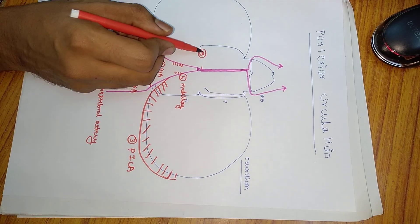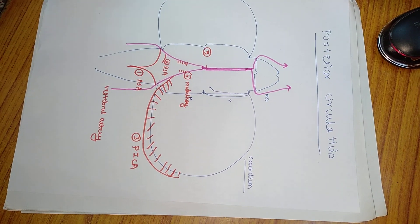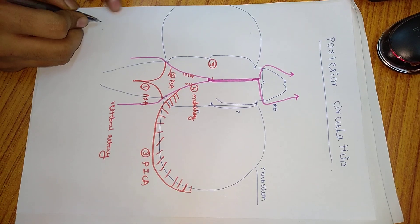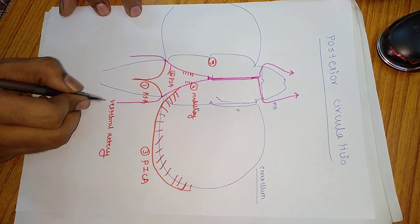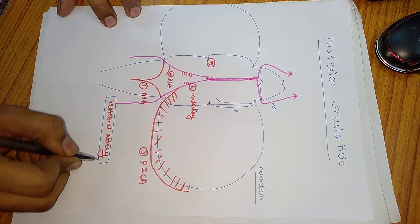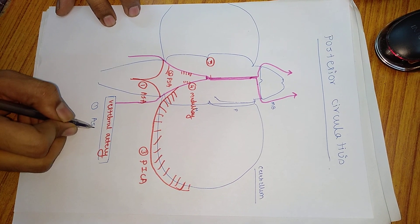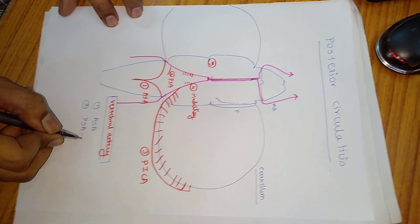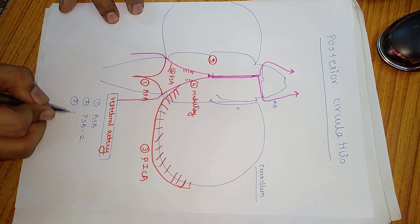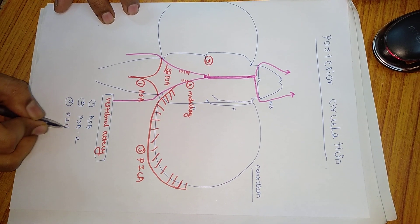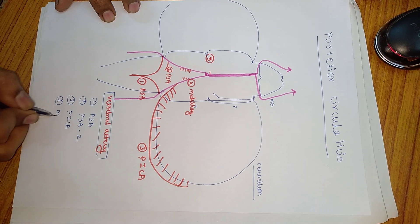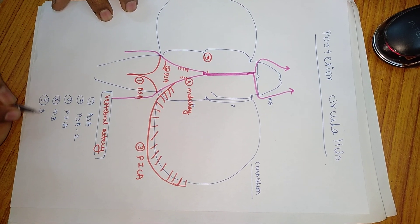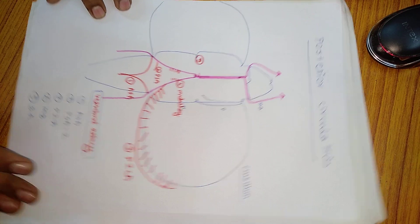The fourth branch is medullary branches, and the fifth one is the terminal branch, which is the basilar artery. So the five branches of the vertebral artery are: first, anterior spinal; second, posterior spinal artery (two in number); third, PICA; fourth, medullary branches; and fifth, the terminal branch which is the basilar artery.